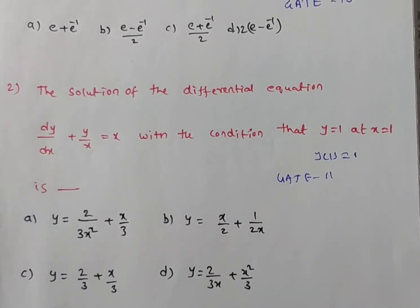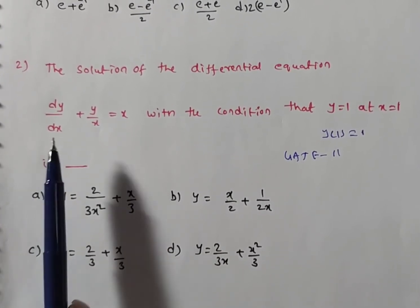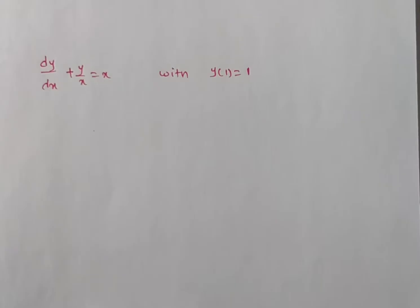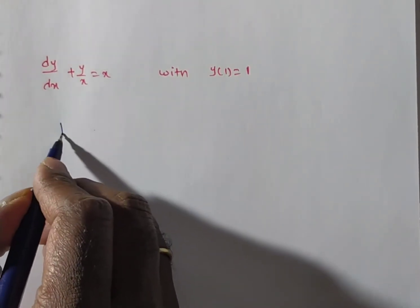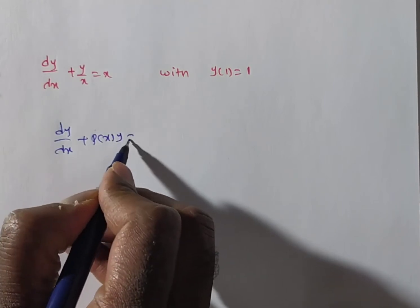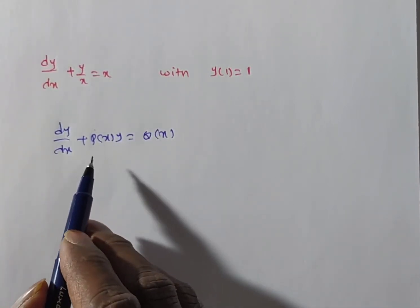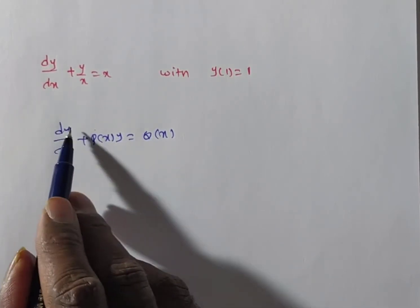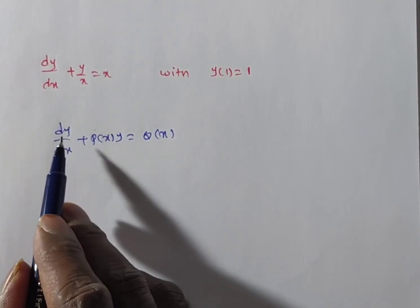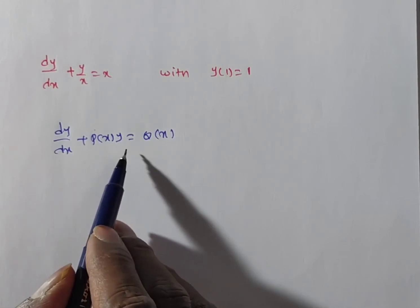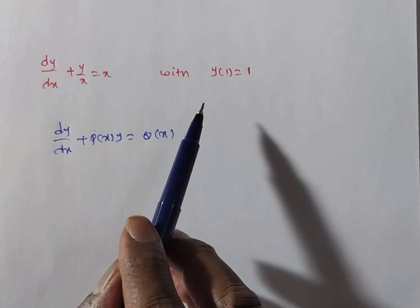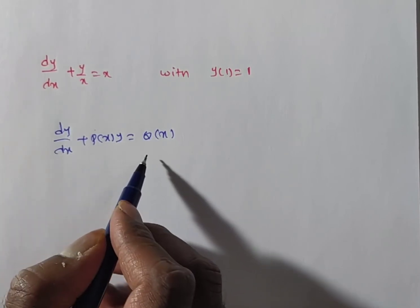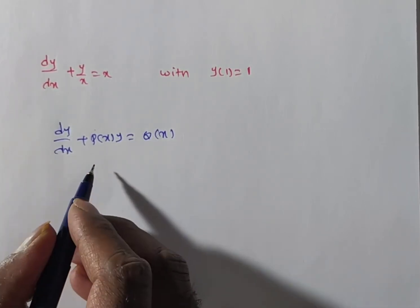The given problem is dy/dx + y/x = x with y(1) = 1. This is in the form dy/dx + P(x)·y = Q(x), so it is a linear differential equation of first order and first degree. Since dy/dx is first order and its degree is also 1, the general solution contains one arbitrary constant, which we eliminate using the given initial condition.